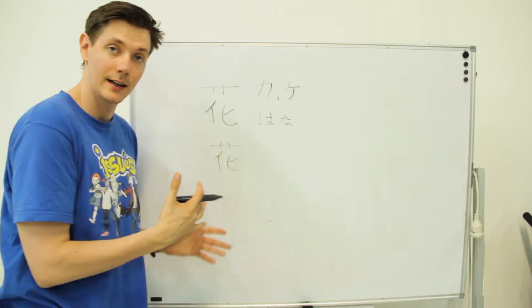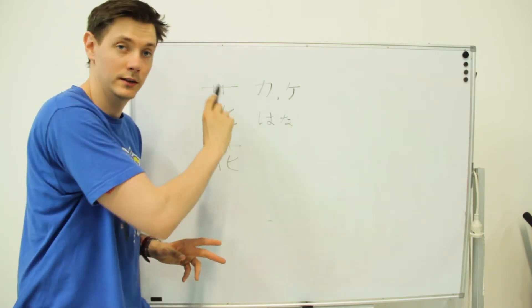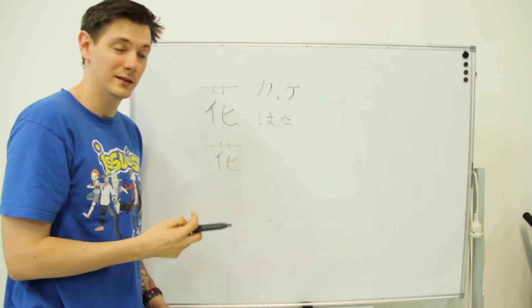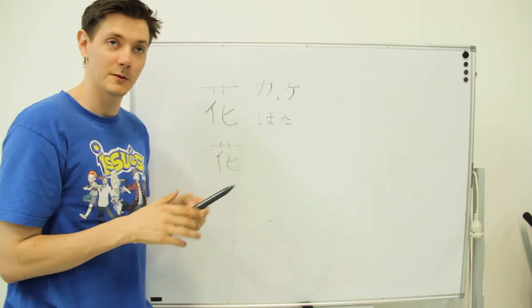If you break this down into elements to try and help you remember, the top part here looks like the number one with two horns in it. It's a horned one. And then it's person and spoon.